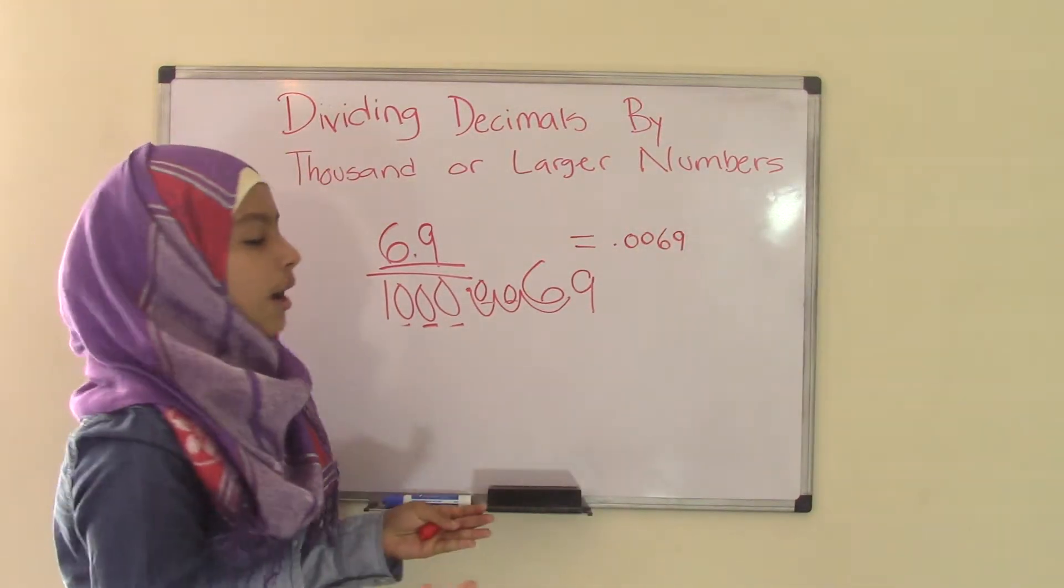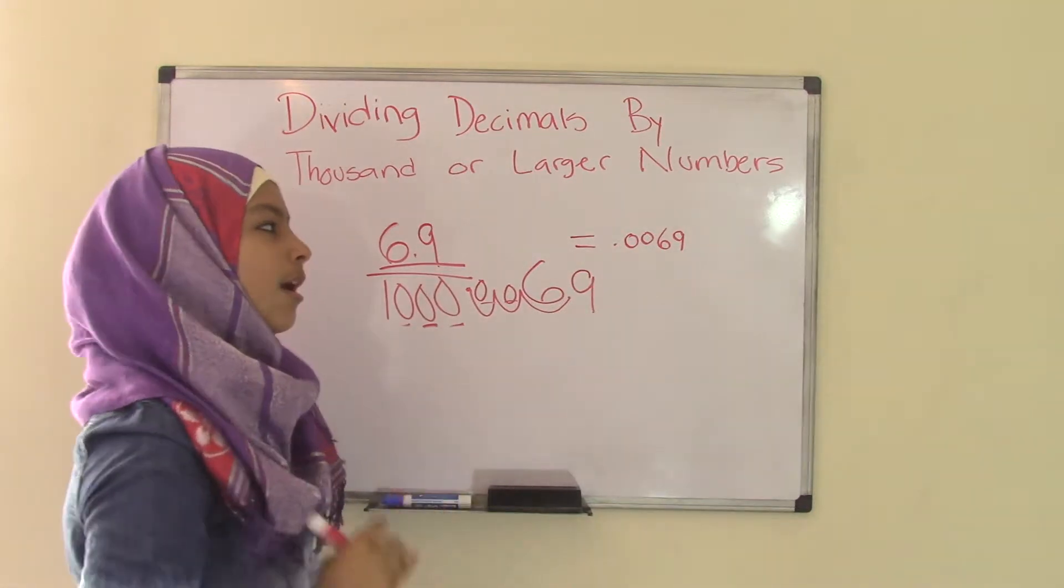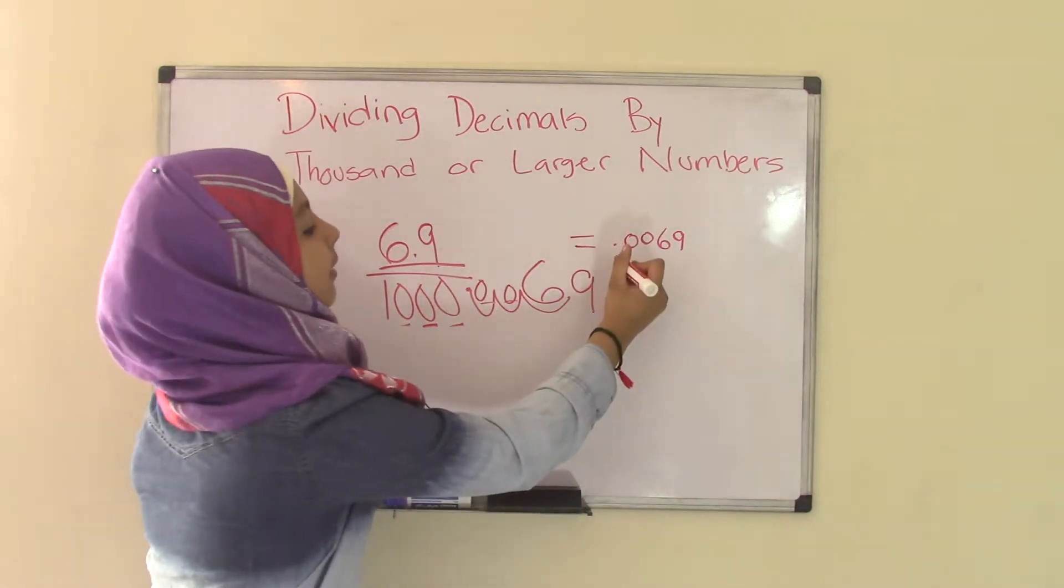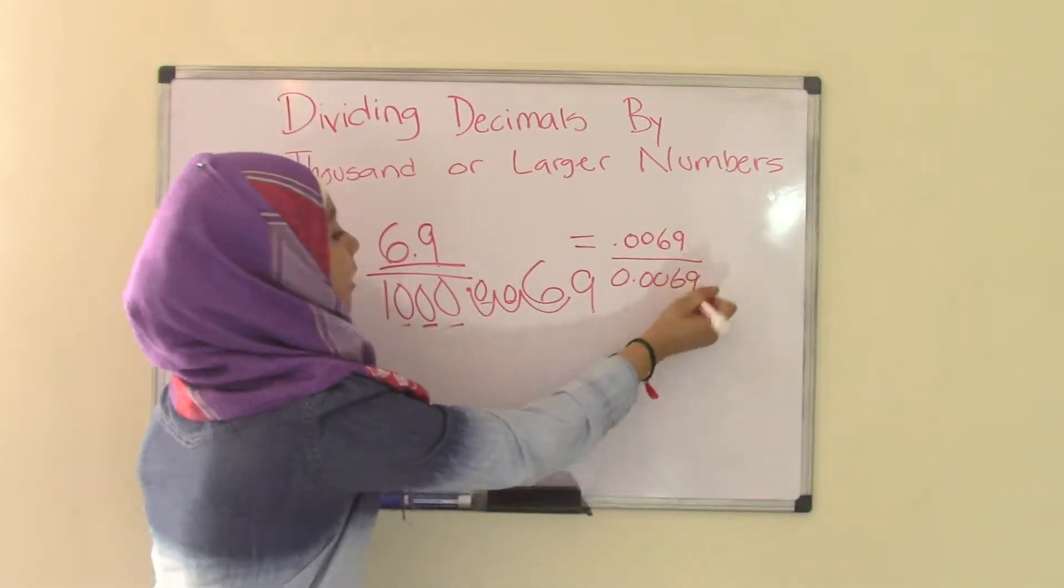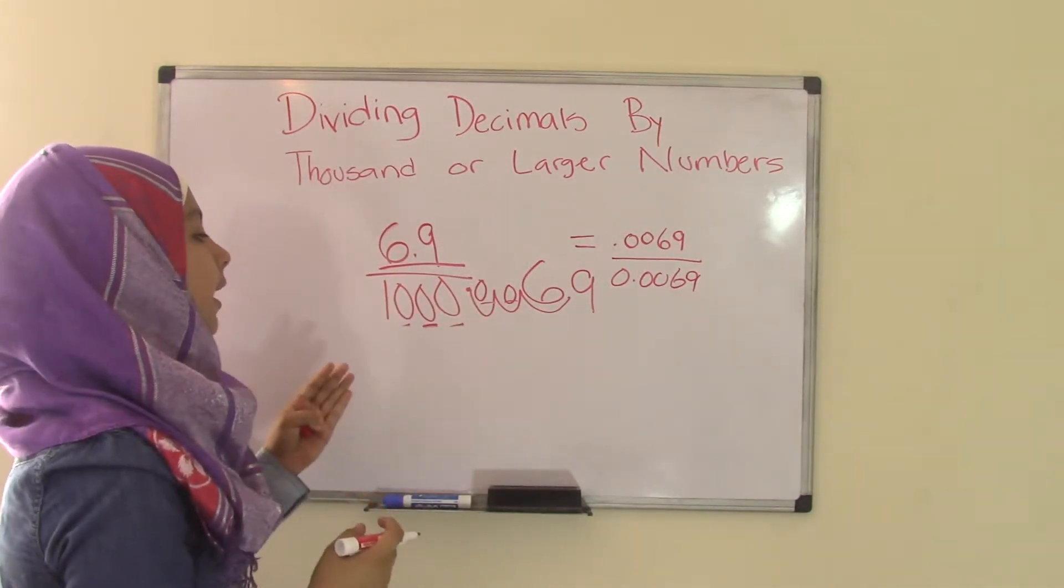Now it's your option if you want to put a zero before the decimal point. But it's not really necessary because the zero holds no value. So you could just write it like this, or you could write it like 0.0069. It doesn't make a difference. So that's it for dividing 6.9 by 1,000.